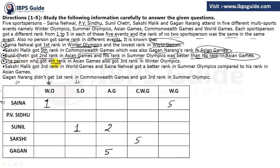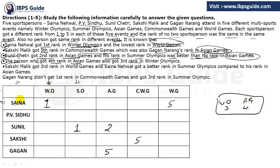The person who got fourth rank in Asian Games also gets third rank in Winter Olympics. We need a player with Winter Olympics rank 3 and Asian Games rank 4. It can't be Saina since she got rank 1 in Winter Olympics, and it can't be Sunil since he got rank 2 in Asian Games, not 4. It can't be Gagan either. So we have two possibilities: PV Sindhu or Sakshi. We'll confirm this later.